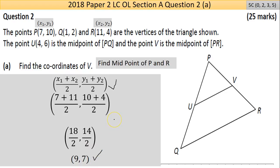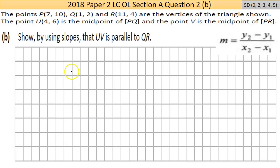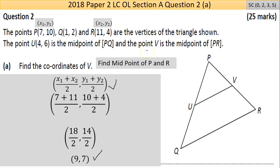Now part B here says—I've screen-taken the points for clarity of the work—but this part B here is the question: show by using slopes that UV is parallel to QR.